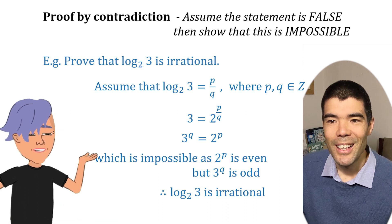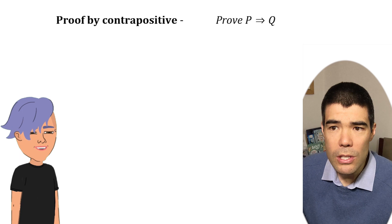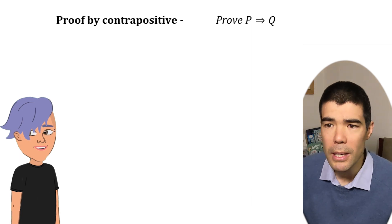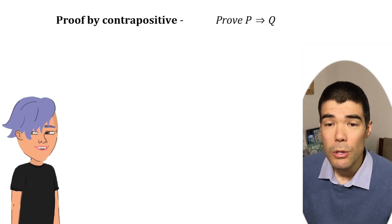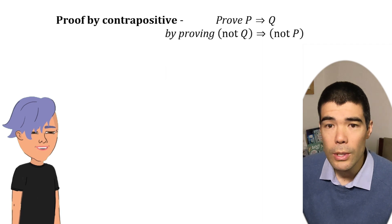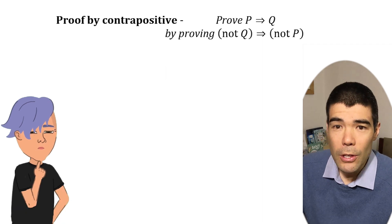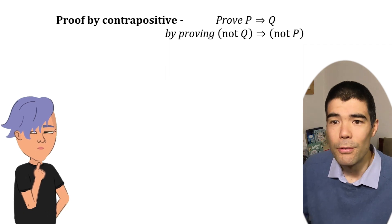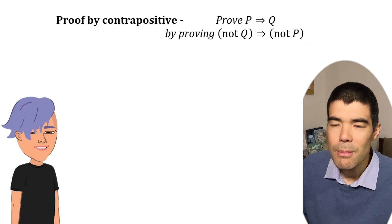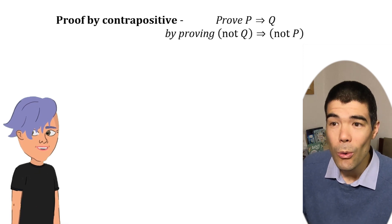What about contrapositive? Okay. So, contrapositive is also for implication statements. So p implies q. The contrapositive is not q implies not p. And if you can prove that, then you've completed the proof. Say what now?